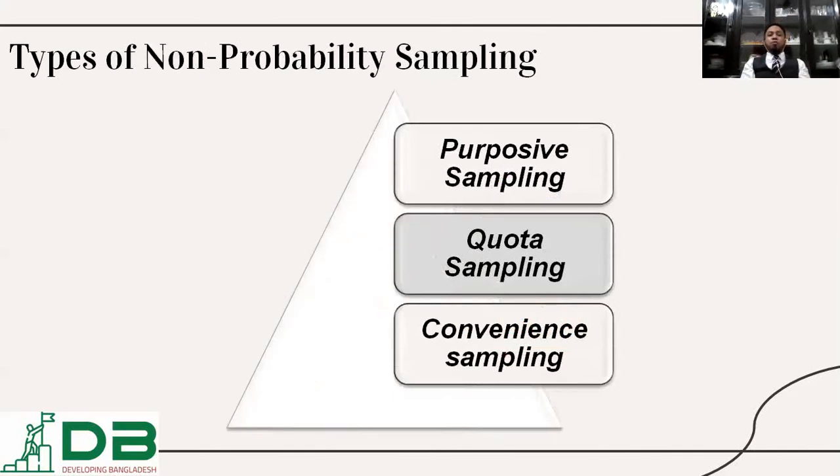Types of non-probability sampling: non-probability sampling are of three types.